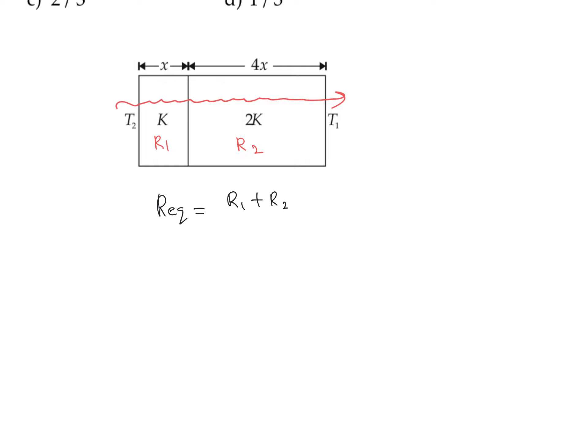The value of R equals L/(KA). So we can write R1 as x/(K·A) plus R2, which is 4x divided by 2K·A.